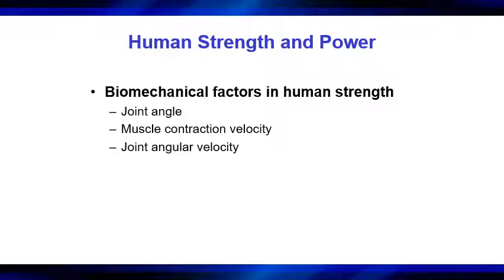The same applies to joint angular velocity — looking at the nonlinear fashion joints work through. The faster you try to move, the less force you'll be able to apply. Joint angle dictates how much strength can be produced at certain positions. At the elbow, the most force is produced at 90 degrees. The contraction velocity relationship — faster contraction yields less force — and joint angular velocity are the same concept, just applied to rotational movement at joints.